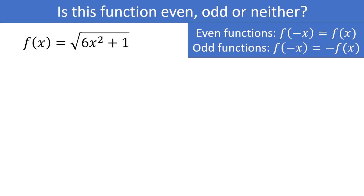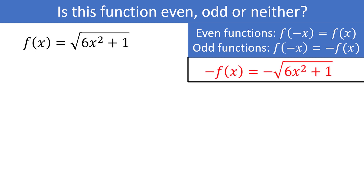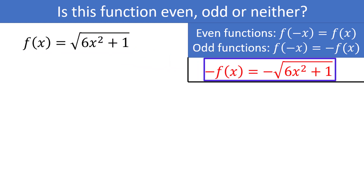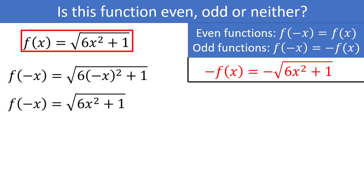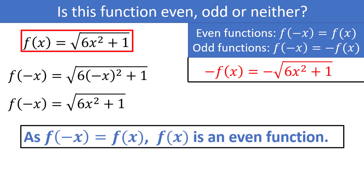Let's try f of x is equal to the square root of 6x squared plus 1 — even, odd, or neither? Negative f of x is the negative square root of 6x squared plus 1. Now f of negative x equals the square root of 6 times negative x squared plus 1. The square cancels the negative, giving us the square root of 6x squared plus 1, which matches our original function. Since f of negative x equals f of x, this is an even function.